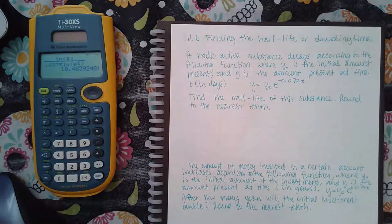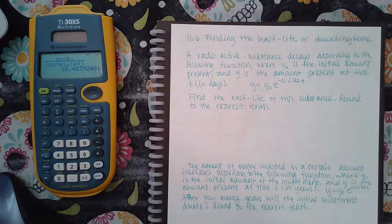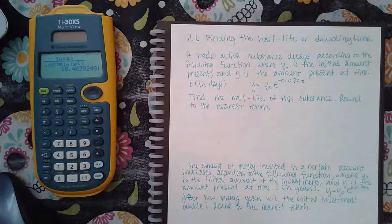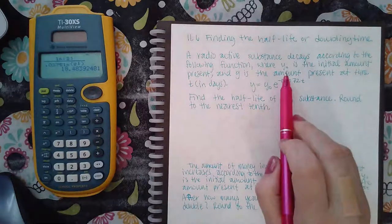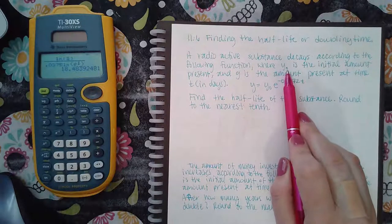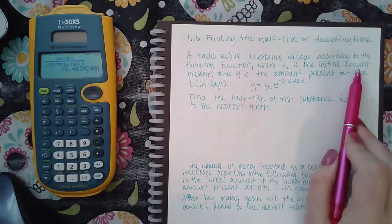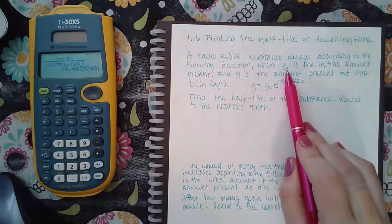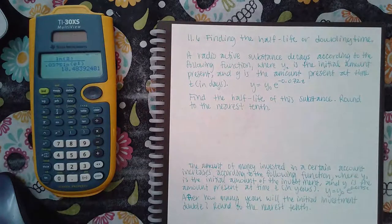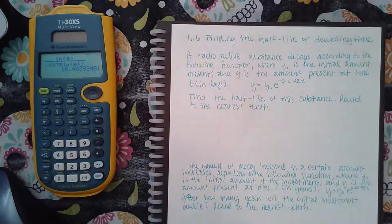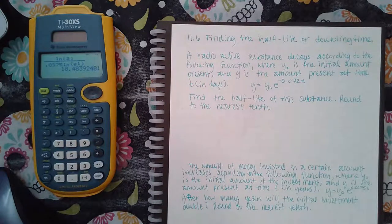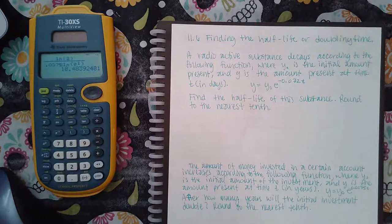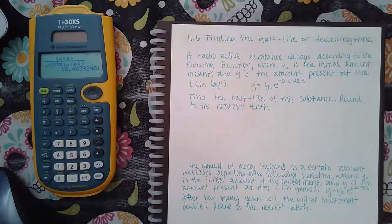This is finding the half-life or doubling time. A radioactive substance decays according to the following function, where y sub zero is the initial amount present and y is the amount present at time t. Instead of using p they used y sub zero for the initial amount, and instead of using a they just used y. Basically a is y and p is y sub zero, t is still time.